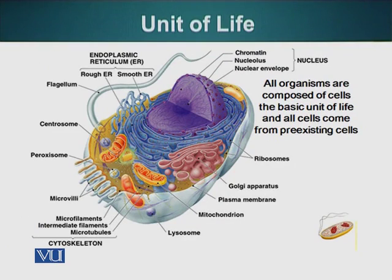We can draw an analogy between a cell and a city. In olden days, cities were entities which had a boundary wall which regulated the traffic. As you can see in our cell diagram, there is a boundary wall also present. This is the cell membrane, also called the plasma membrane.